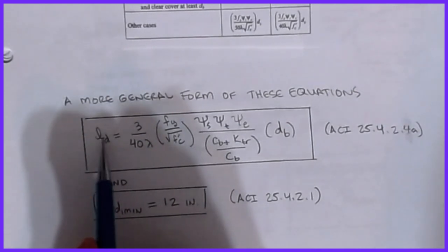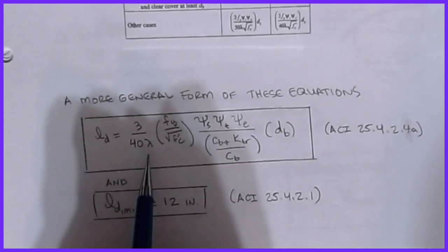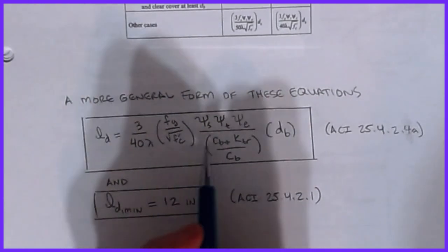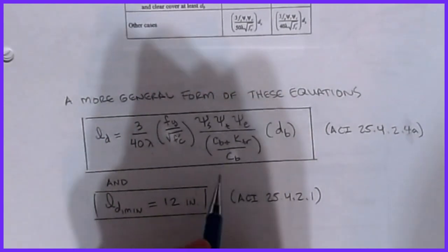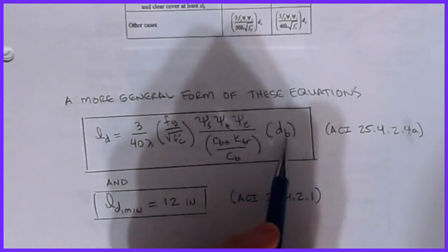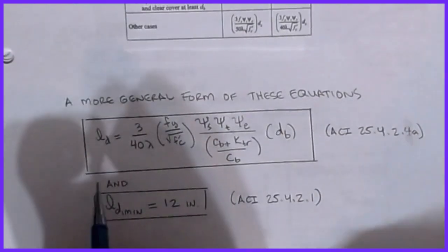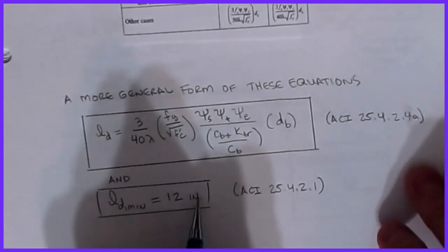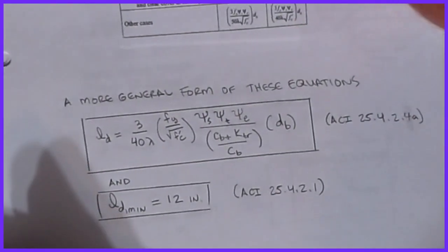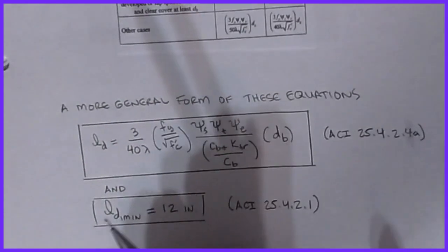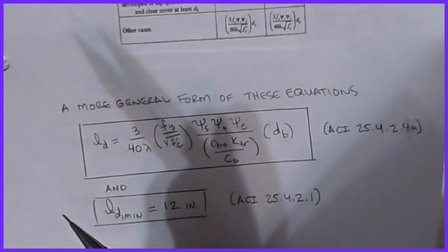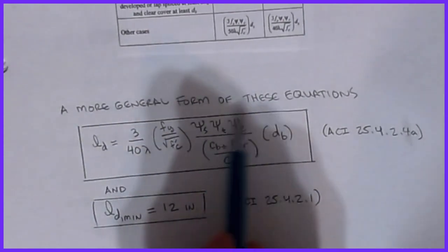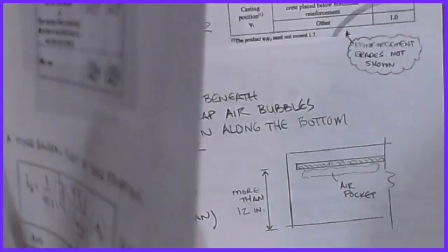The development length formula (ACI 25.4.2.4a) is: ld = (3/40) × (1/λ) × (fy / √f'c) × [(ψt × ψe × ψs) / (cb + Ktr)/db] × db, with a minimum ld of 12 inches. Lambda is the lightweight concrete factor — 1.0 for normal weight. The bigger the bar diameter db, the bigger ld is. The factors ψs, ψt, and ψe, along with the term (cb + Ktr)/db, are the key parameters we need to evaluate.